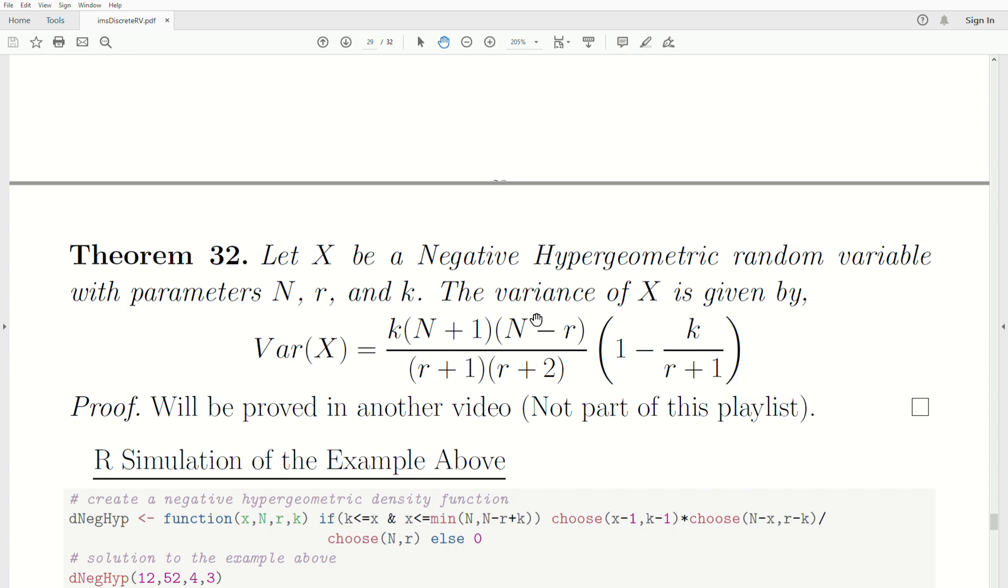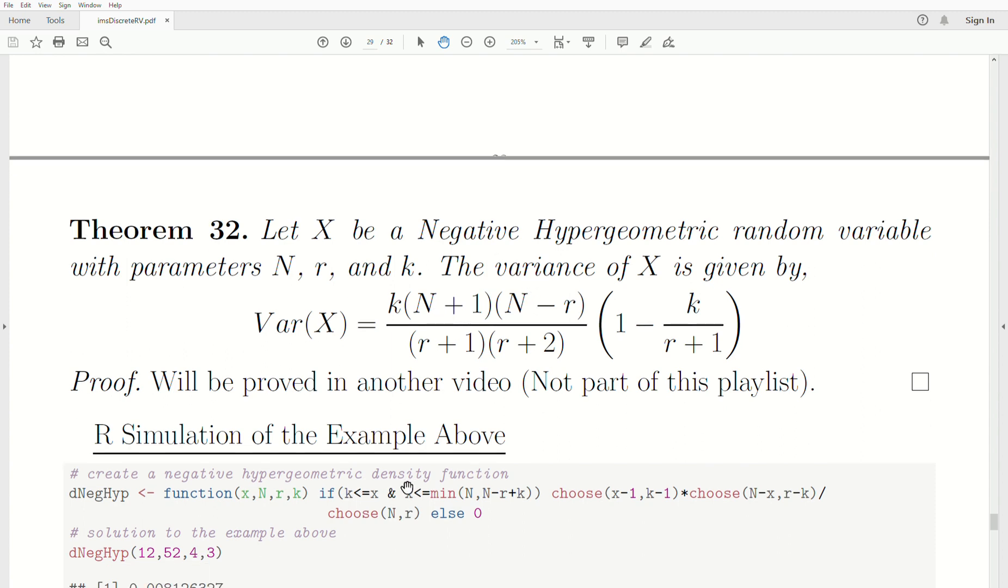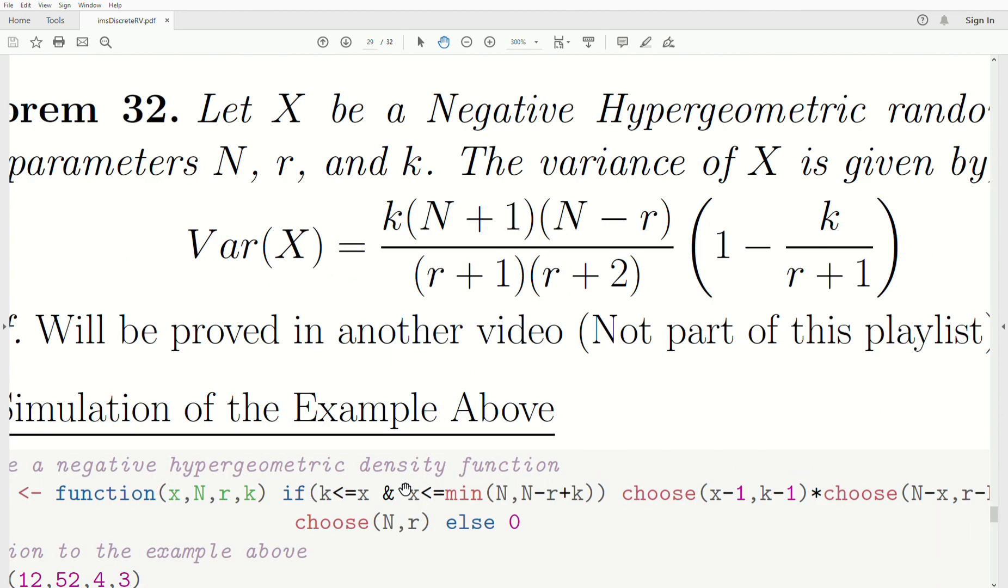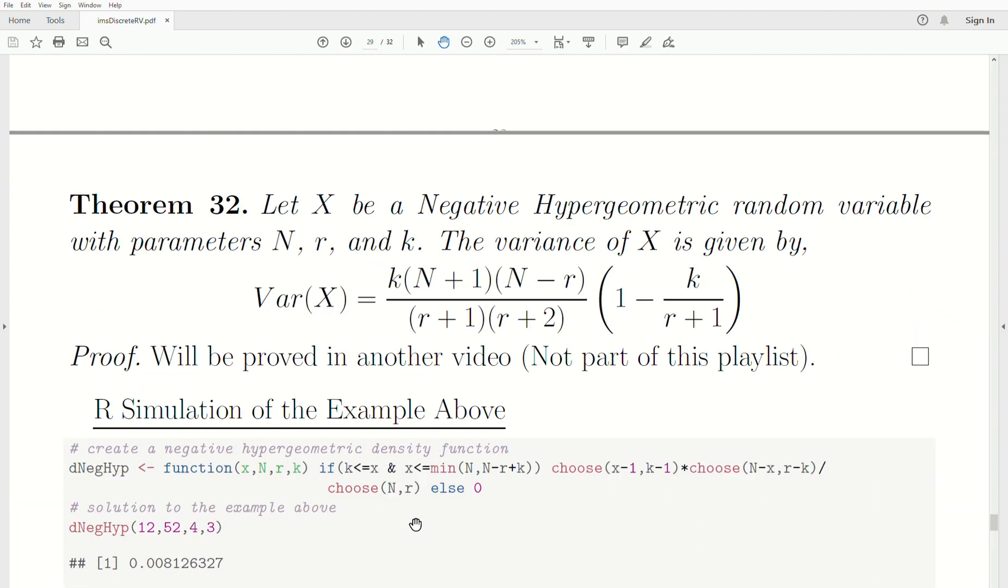Now I want to calculate and simulate the example that we just did. I create a function called dneghype, which stands for the density of a negative hypergeometric distribution. It has these four parameters: x, n, r, and k. If x is greater or equal to k and less than or equal to this requirement, then it provides the value—the product of the combinatorics divided by combinatorics. If it doesn't meet it, it prints out a zero.